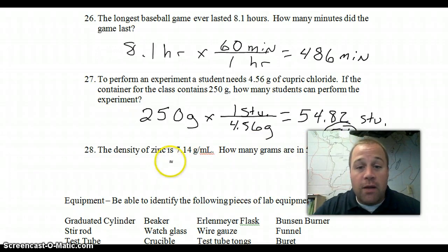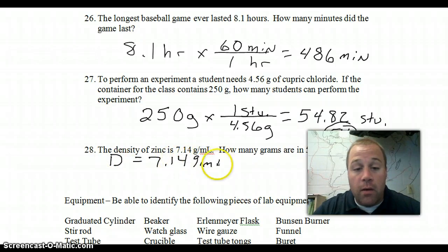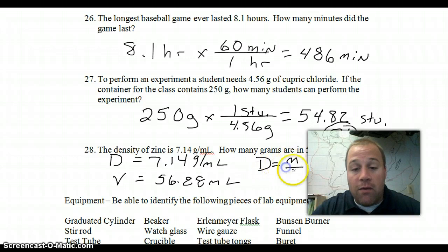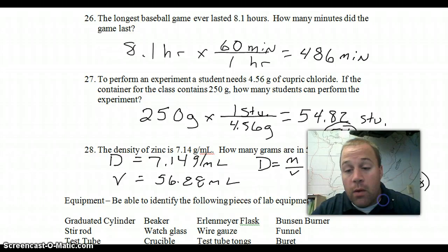For number 28, you are going to do a density problem. In this case, it gives us the density of zinc is 7.14 grams per milliliter. And, it also gives us a volume of 56.88 milliliters. Remember our equation? Everybody loves density. So, density equals the heart, which, if you remember, was mass over volume. We are going to solve for mass. So, if I rearrange the equation ahead of time, because I like to do that, I am going to say mass is equal to density times volume. So, that would be 7.14 times my volume, which is 56.88. And, I am going to solve. And, my answer is going to be in grams. And, I got 406.1. So, 406.1 grams.